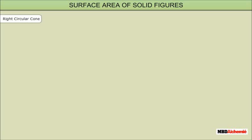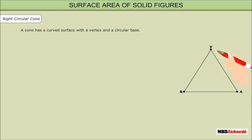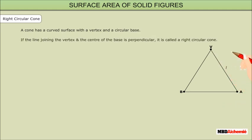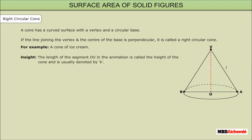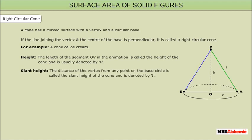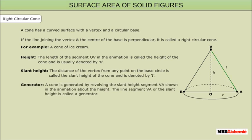Right circular cone: A cone has a curved surface with a vertex and a circular base. If the line joining the vertex and the center of the base is perpendicular, it is called a right circular cone — for example, an ice cream cone. Height: the length of segment OV is called the height of the cone, denoted by h. Slant height: the distance from the vertex to any point on the base circle is the slant height, denoted by l. A cone is generated by revolving the slant height segment VA about the height; this segment VA is called a generator.